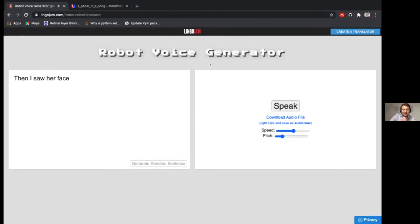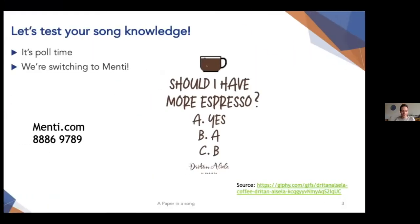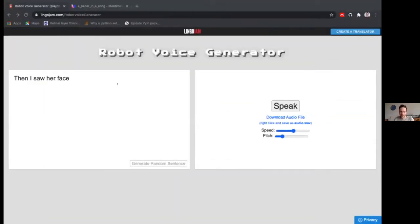Can you just quickly show the code again and then we can paste it in the chat? Yeah, of course. Sorry. 8886 9789. Yeah. Sorry about that. No problem. Thanks. Okay, great. Thanks. So now I'm going just to let the robot speak this sentence. Then I saw her face.